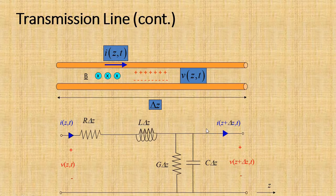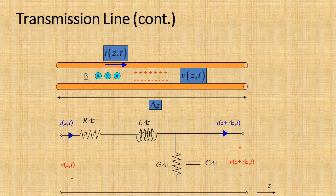Now let's start. This small section of the transmission line is constituted of different resistance, inductance, conductance, and capacitance. So why do we introduce resistance? Basically, due to the lossy nature of the material, some losses occur in the line as current flows through it. Therefore we use a resistance R, which is responsible for the power dissipation in the line due to the lossy nature.